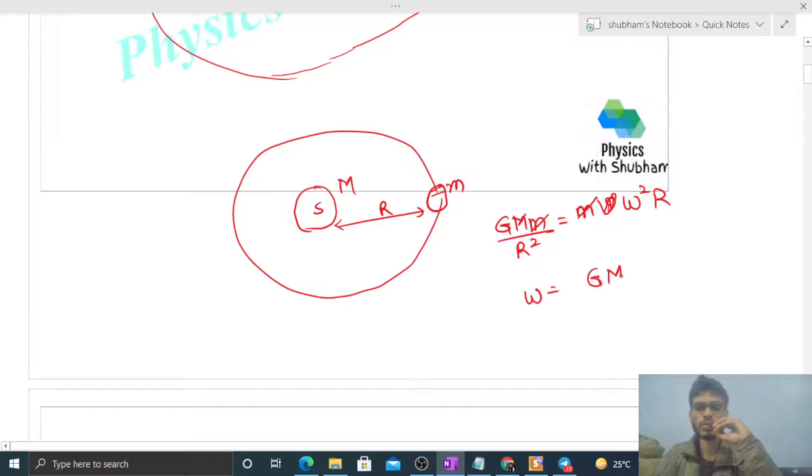So omega is under root of GM by r cube. This whole thing is under the root. So what will be the time period? Time period will be 2π by omega.